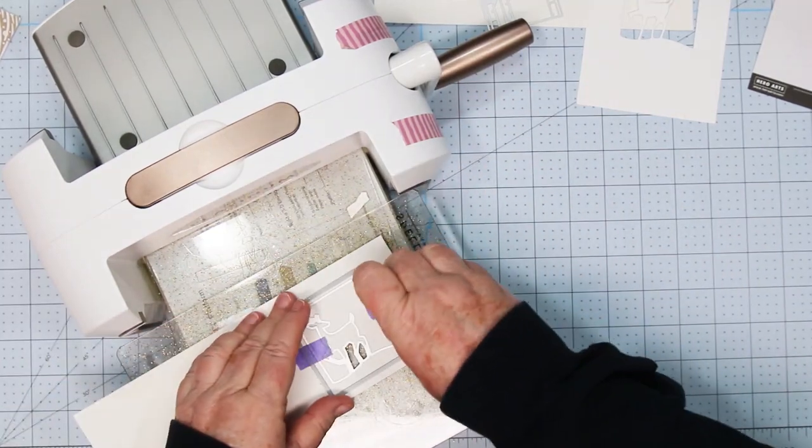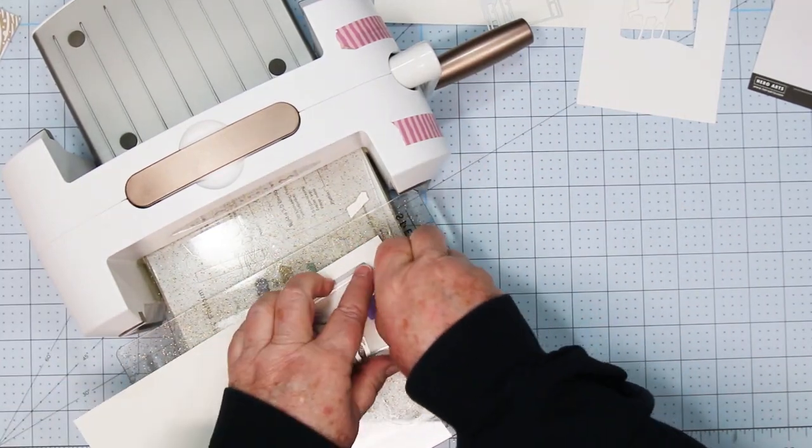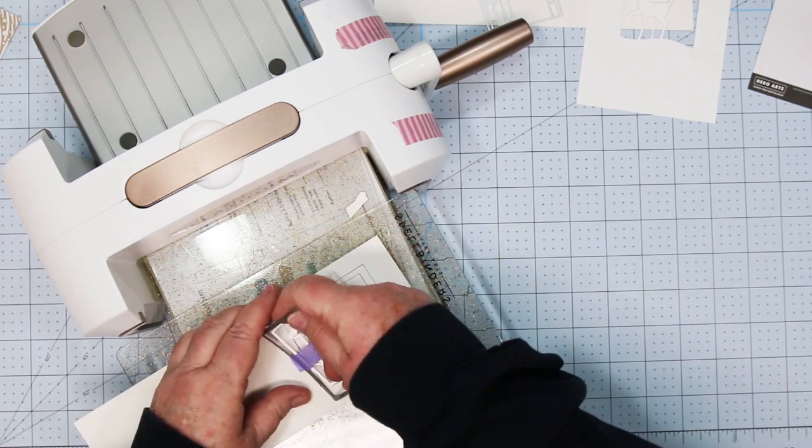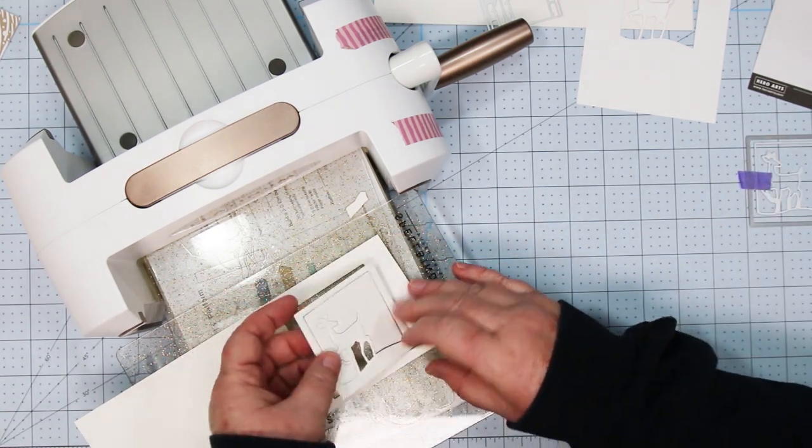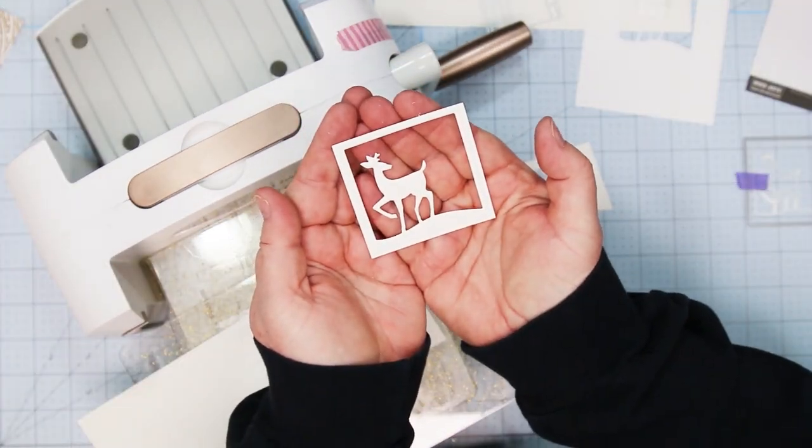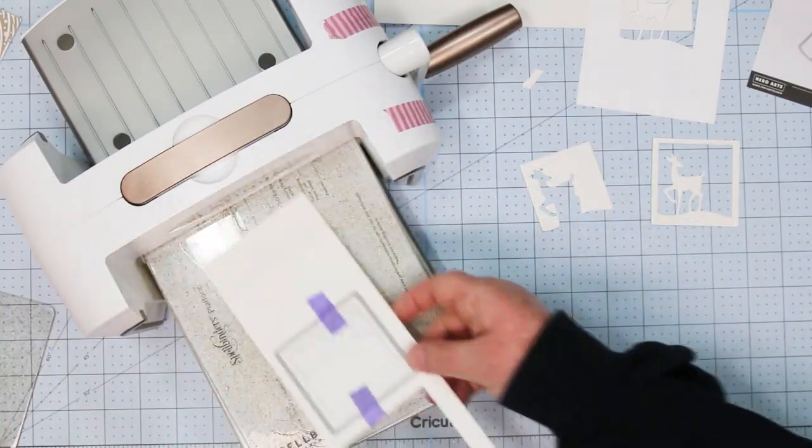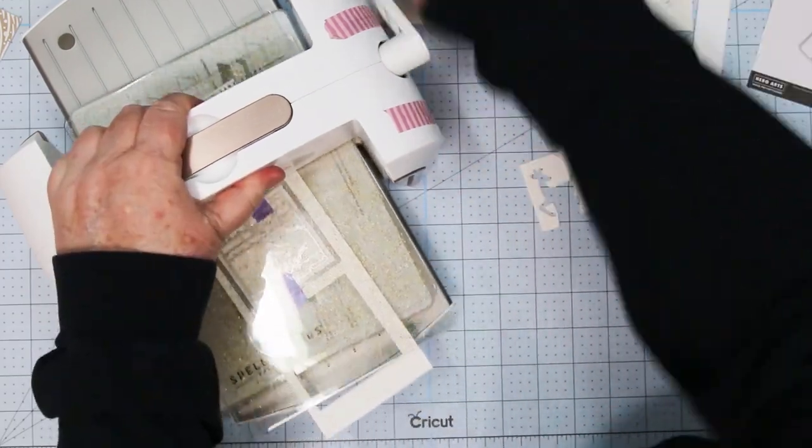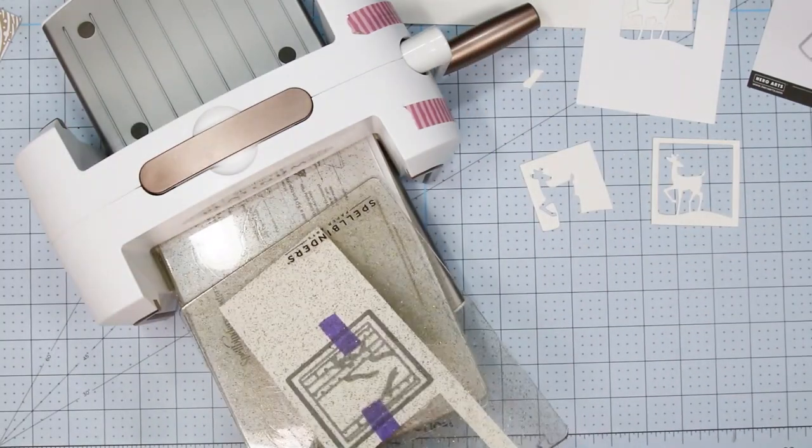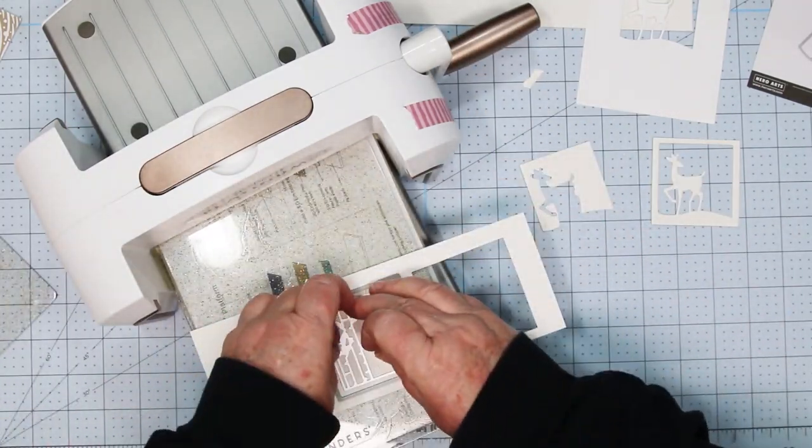So I'm running it through my Platinum 6 die cutting machine. And I'm just going to take off the tape and the dies. And you will see just how easily these little guys pop out. These dies are beautiful cuts. Now there's a quick way to get a cute little art piece. Isn't that sweet? So we're going to repeat this process and we're going to do the trees next.